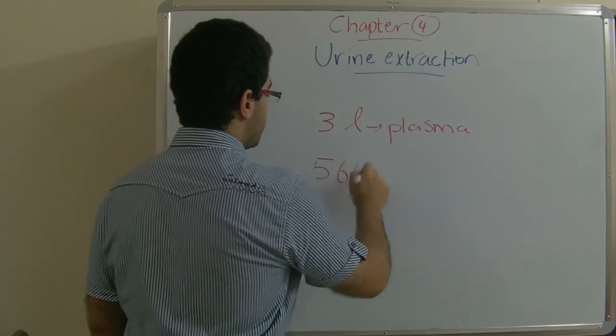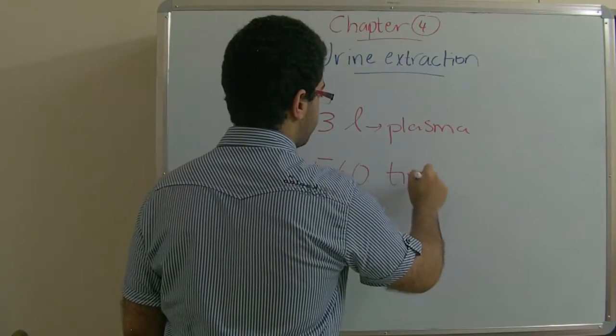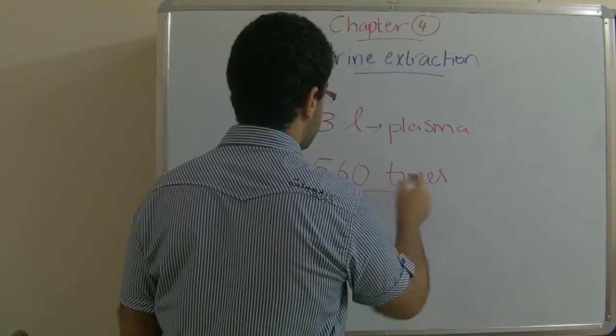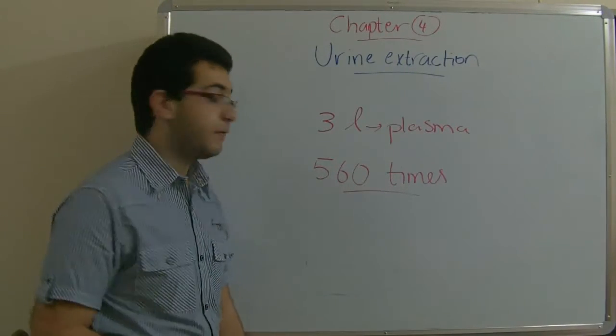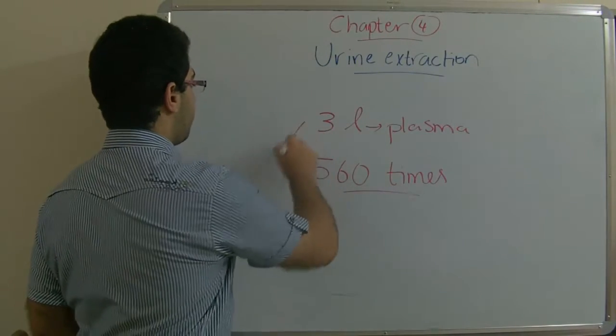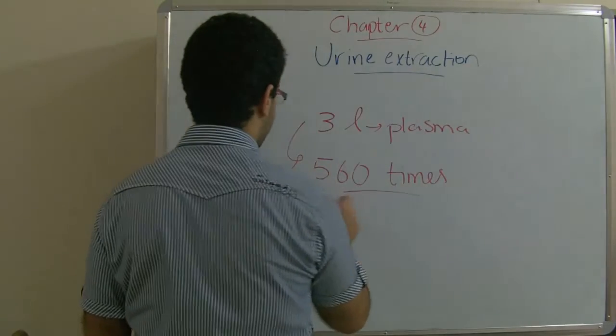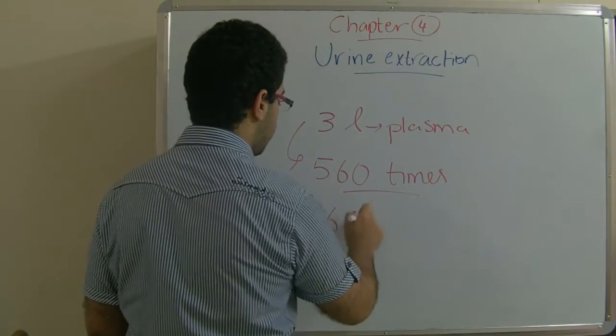pass 560 times by the kidneys in order to be filtered. If we multiply 3 by 560, it would result 1680.